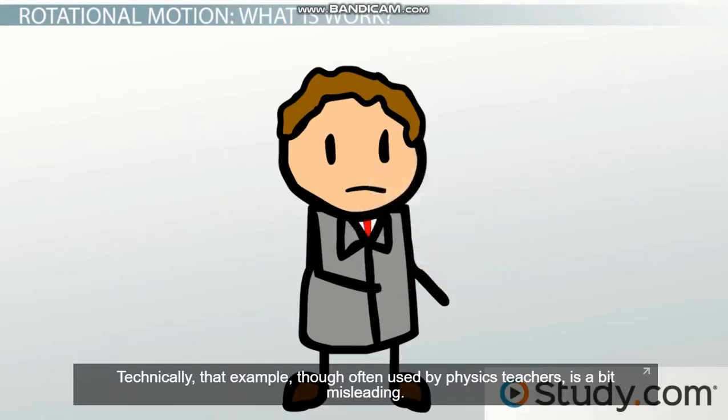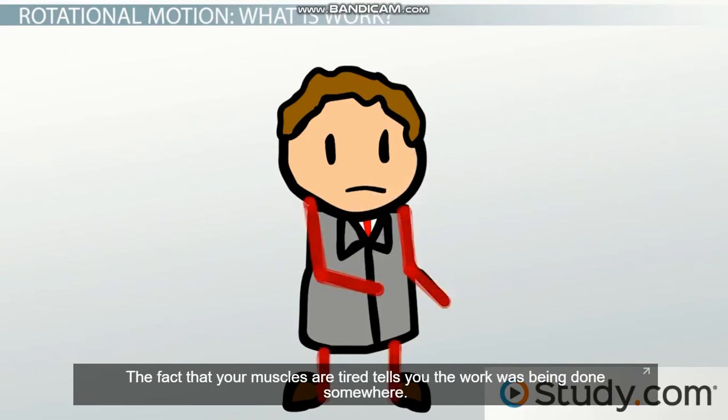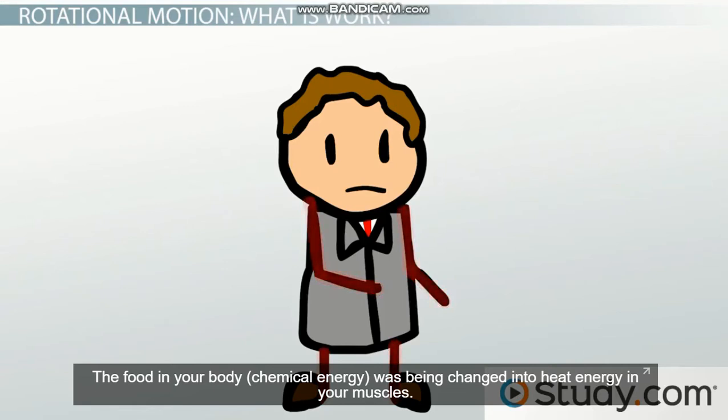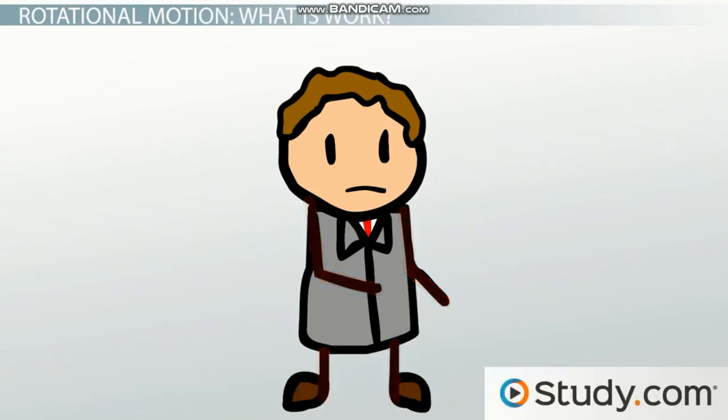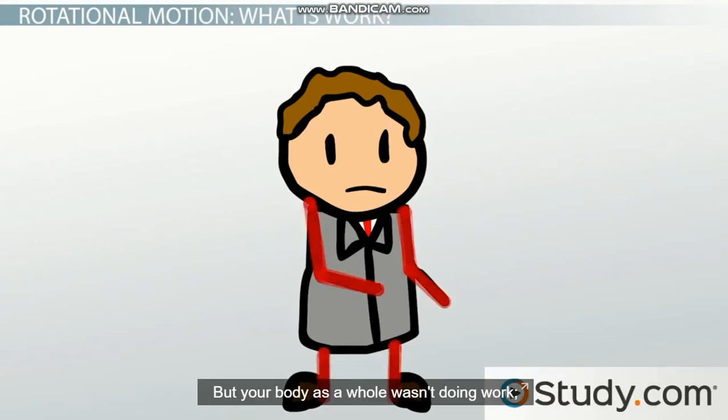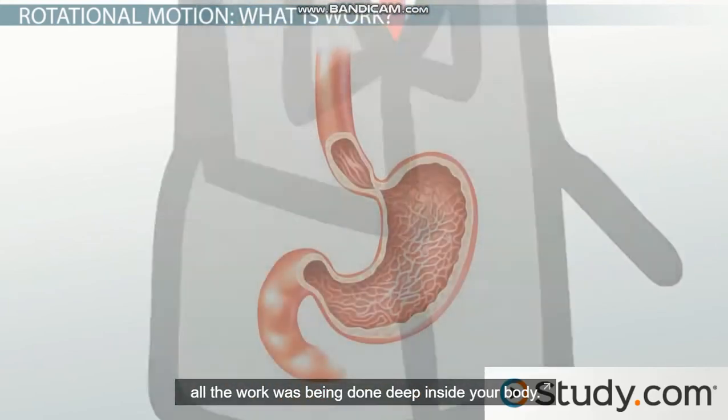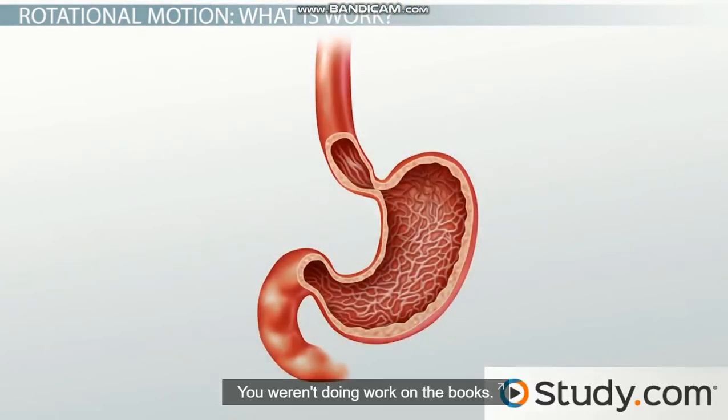Technically that example, though often used by physics teachers, is a bit misleading. The fact that your muscles are tired tells you that work was being done somewhere. The food in your body, chemical energy, was being changed into heat energy in your muscles. But your body as a whole wasn't doing work. All the work was being done deep inside your body. You weren't doing work on the books.